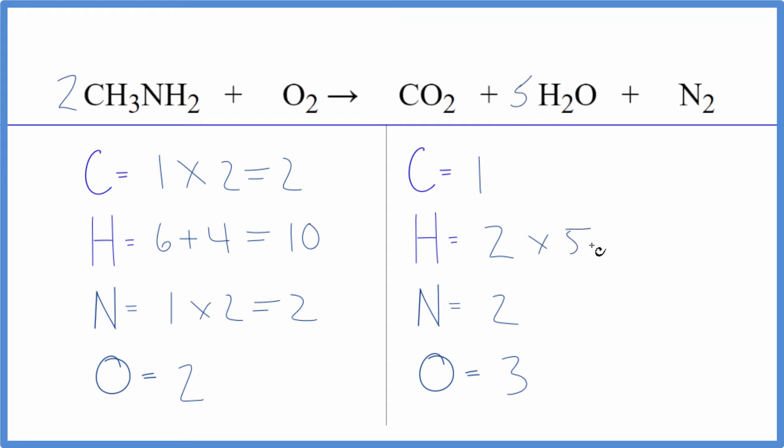Now I have two times five gives me ten hydrogen atoms, that's good. Let's update the oxygens so we have two here plus five times one, five. Now I have seven oxygens. Let's next balance the carbons. Remember we're leaving the oxygens for last.